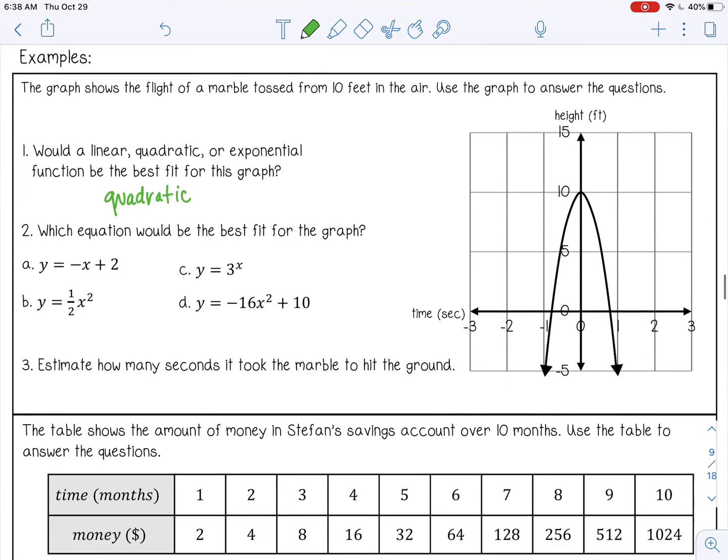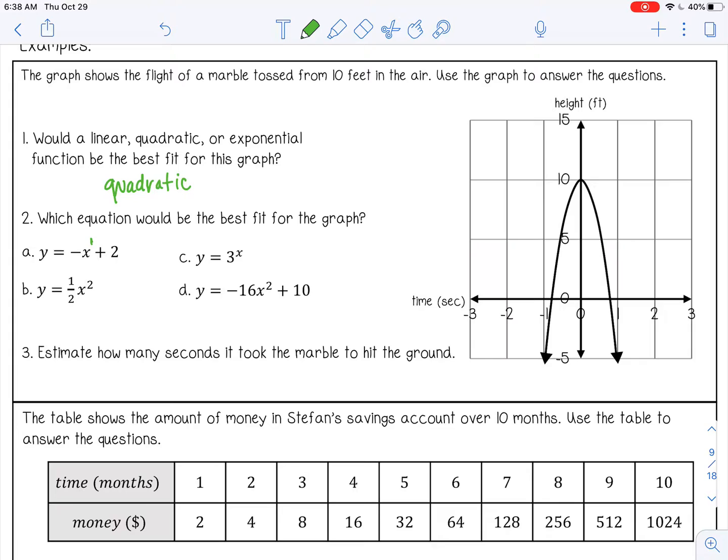So A is a linear equation. It's got X to the first power, so this is definitely not a line. B is a quadratic. It has X squared, so that's a possibility. C is exponential, 3 to the X power, so that would be an exponential graph, a J-shaped graph. That's not it. And then D is also quadratic, so we need to decide between B and D. And I noticed that this parabola is upside down. It's opening down, which means it has to have a negative out front. So that means D is going to be our answer.